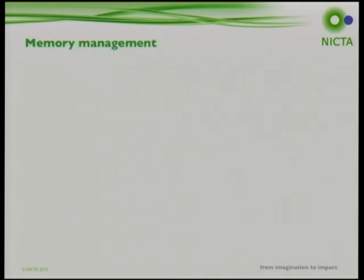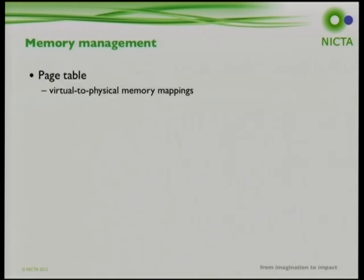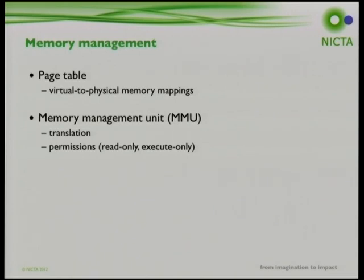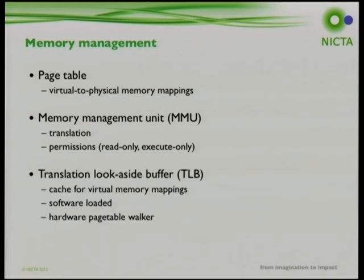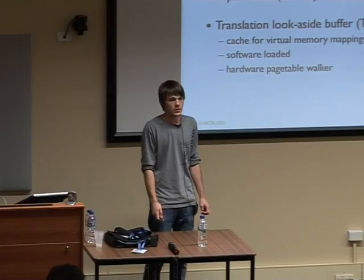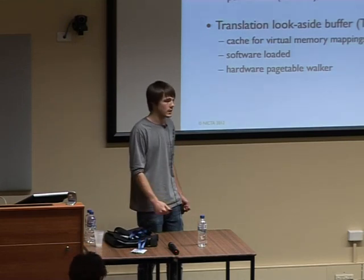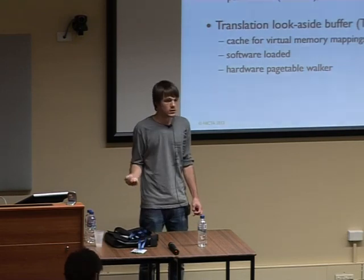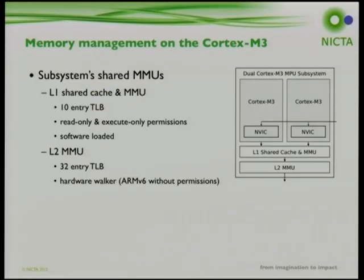Memory management creates virtual address spaces for user space applications and controls how they map to physical memory, using page tables and an MMU for translations and permissions. MMUs use a translation lookaside buffer to cache these mappings for performance, either software-loaded or hardware-walked. On the OMAP, the M3s themselves are designed without memory management and don't include an MMU, but TI placed two MMUs on the M3 subsystem.